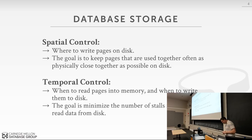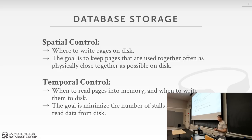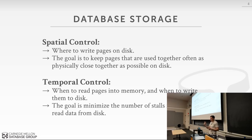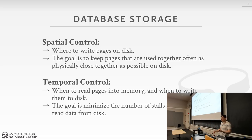Another way to think about the problem is this trade-off between spatial and temporal control of data. Spatial control — what we've talked about so far — is how we're going to write files to disk and lay out pages. The goal was that since disks are faster at sequential access, especially spinning-disk hard drives where a mechanical arm jumps around on the platter, we want data that will be accessed together in a query to be physically located next to each other on disk.